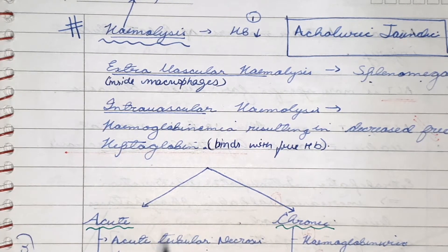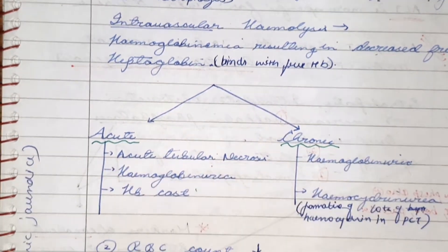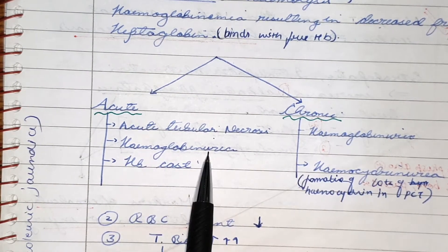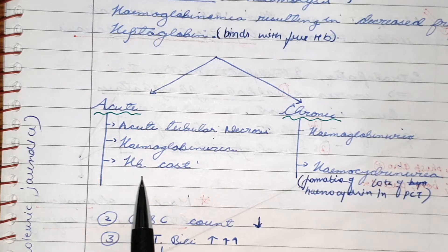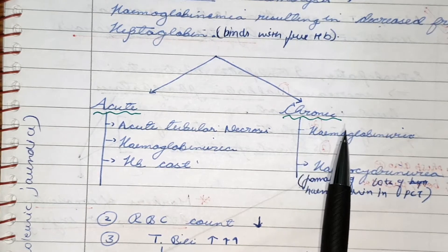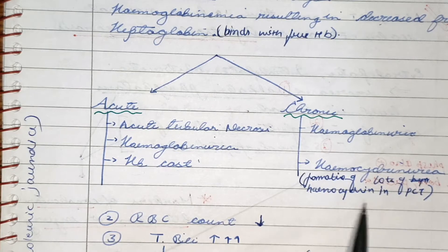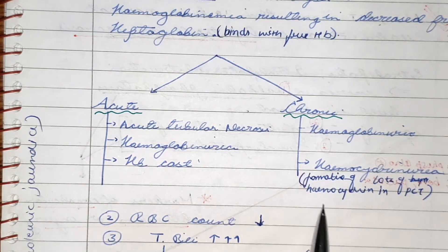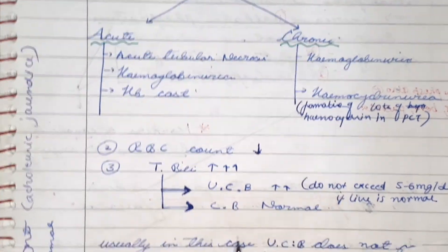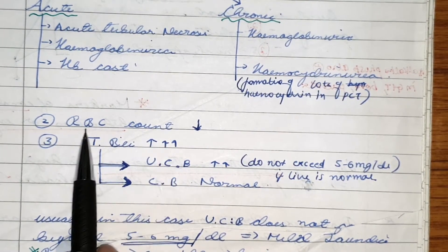In acute intravascular hemolysis there is acute tubular necrosis, hemoglobinuria, and presence of hemoglobin casts in the urine. In chronic intravascular hemolysis there is hemoglobinuria and hemosiderinuria — hemosiderin is present in large amounts in the PCT and is excreted in the urine. The RBC count decreases because of excessive hemolysis.